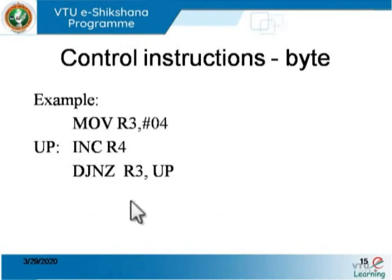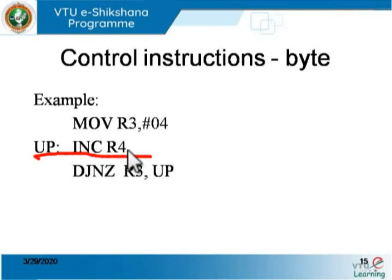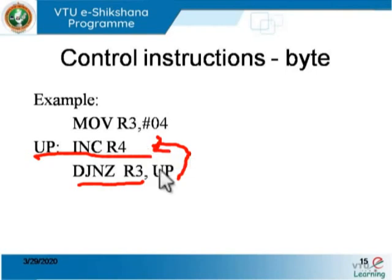A usage example of DJNZ: R3 is loaded with 4 and R4 is some value that keeps incrementing. Each loop iteration: DJNZ decrements R3 (4→3→2→1→0) and increments R4. After R3 becomes 0 the loop exits. This loop executes 4 times and then the instruction following DJNZ is executed. Another example shows nested DJNZ loops used for generating delays.